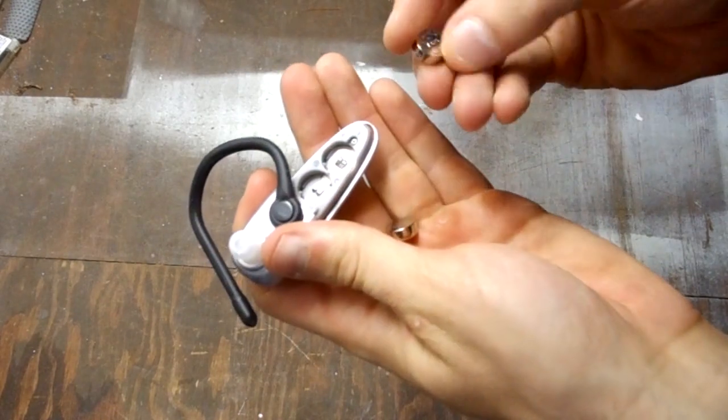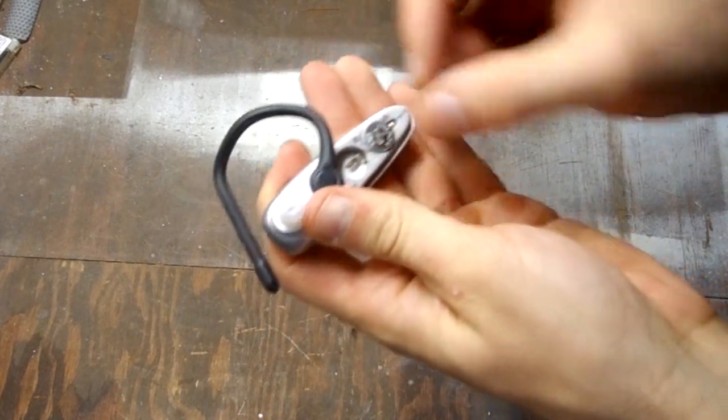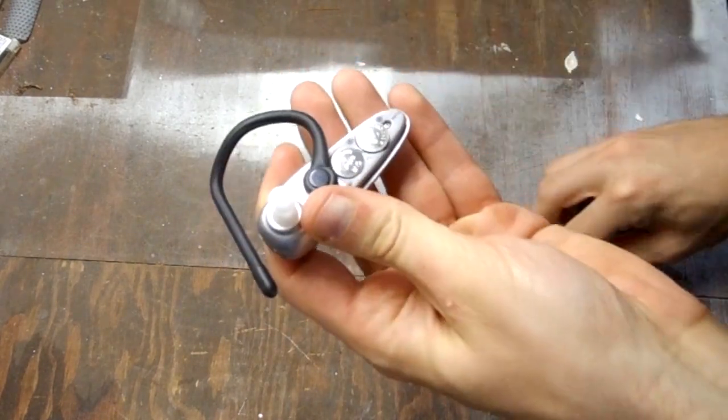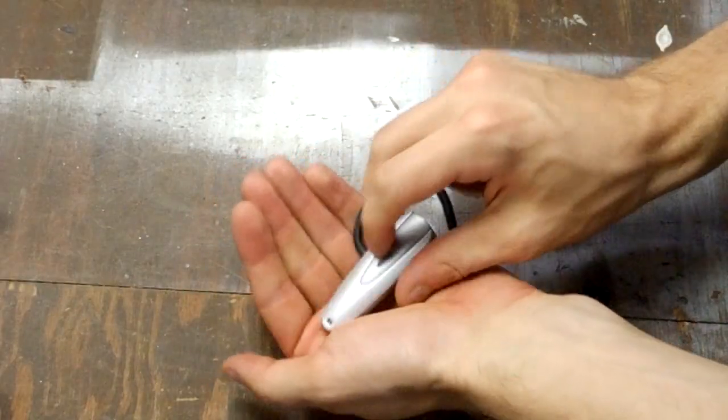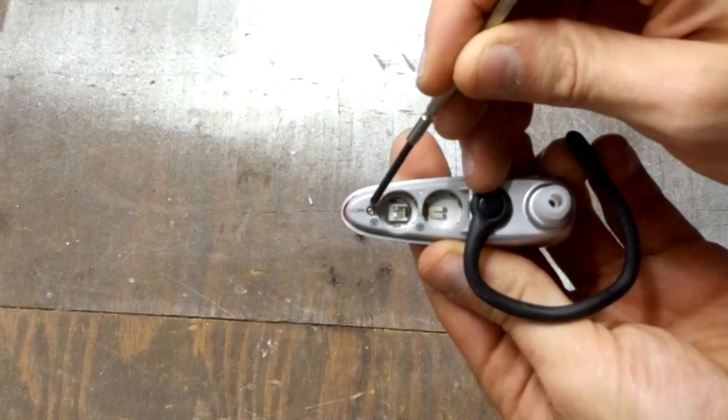First, let's remove the battery cover and put in some batteries. Looking sharp. Okay so it works. Let's take the batteries out, and then remove this screw.